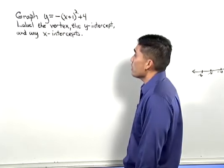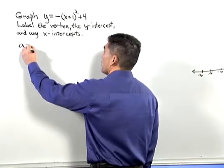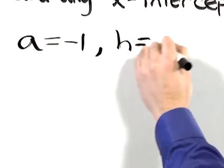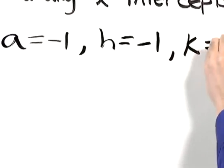Looking at this equation, the first thing we note is that the a value is negative 1, the h value is negative 1, and the k value is 4.